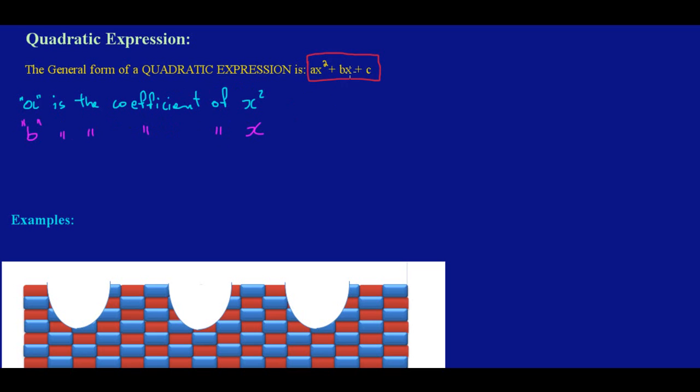And c is the constant. As we learned before, a constant is a number that doesn't change. C is also called the y-intercept, which is very important.